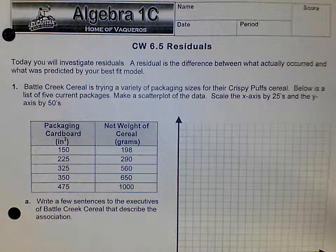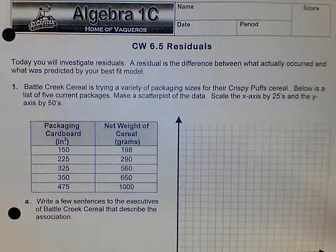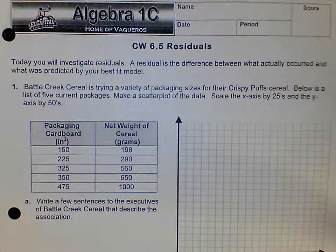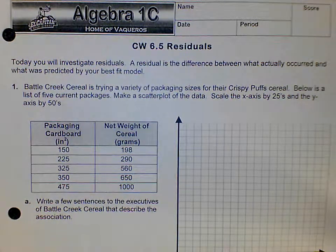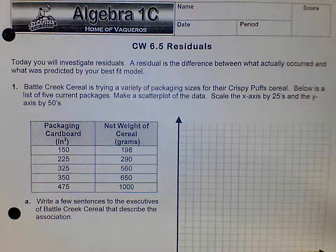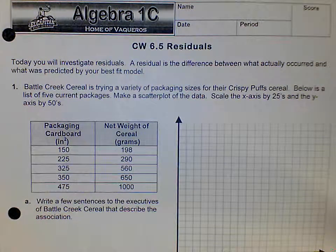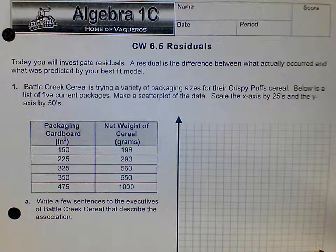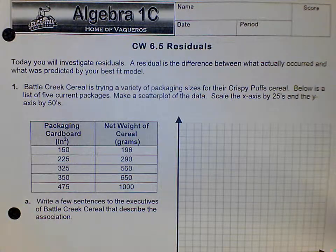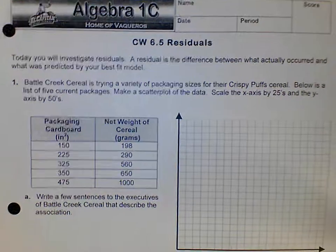Good afternoon. Today we're going to be doing classwork 6.5 residuals. You will investigate residuals - a residual is the difference between what actually occurred and what was predicted by your best fit model. Number one: Battle Creek Cereal is trying a variety of packaging sizes for their Crispy Puff cereal. Below is a list of five current packages. Make a scatter plot of the data. Scale the x-axis by 25 and the y-axis by 50s.